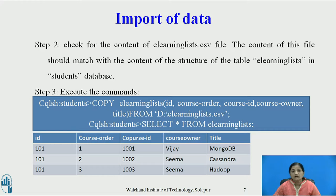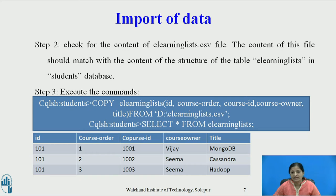Step 2 — check the content of the elearninglist.csv file to verify that its structure matches the structure of the table. Step 3 — execute the COPY command: COPY elearninglist followed by the column list FROM the source file elearninglist.csv. Then display the content of the table to confirm the import using SELECT * FROM elearninglist. All three rows in the CSV file have been imported into the table.